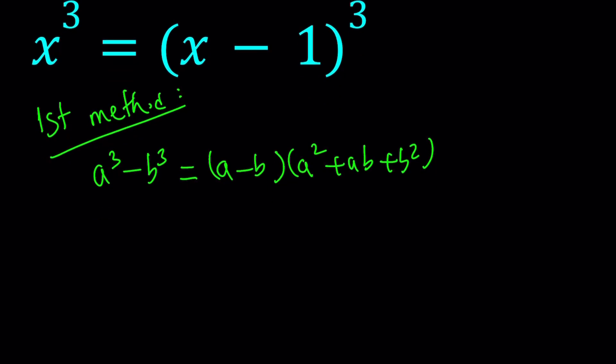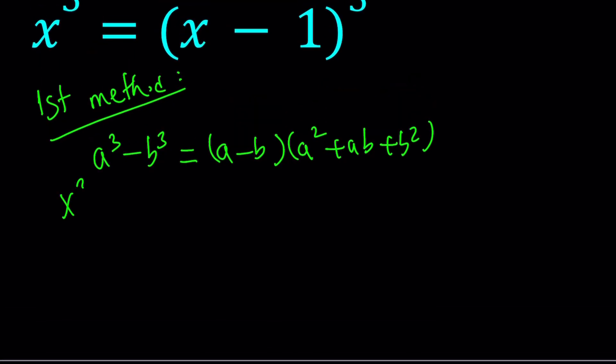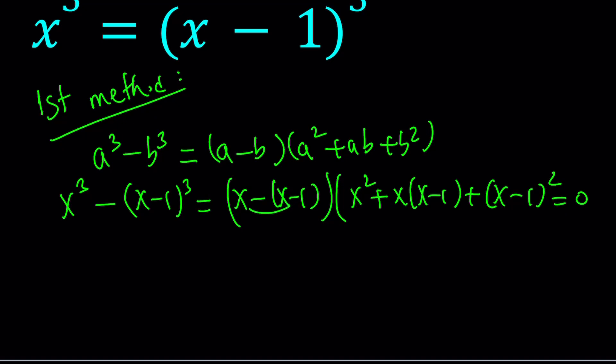So if we use that formula, we're going to write it as x³ minus (x - 1)³. Then we can write it as (x - (x - 1)) multiplied by (x² + x(x - 1) + (x - 1)²), and this equals 0. x minus (x - 1) is going to be 1 because the negatives cancel and x cancels out. So we just have to focus on the second factor.